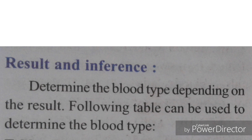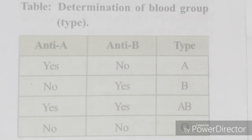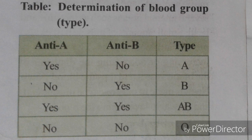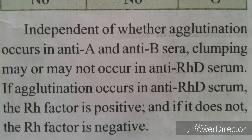Based on the table, we can determine the blood group as follows: if the result is yes for anti-A sera and no for anti-B sera, the blood group is A. If it is no for anti-A sera and yes for anti-B sera, the blood group is B. If it is yes for both anti-A and anti-B sera, the blood group is AB. If it is no for both anti-A and anti-B sera, the blood group is O.